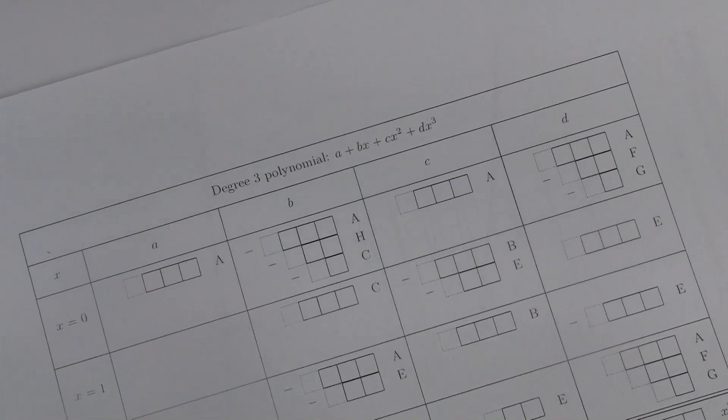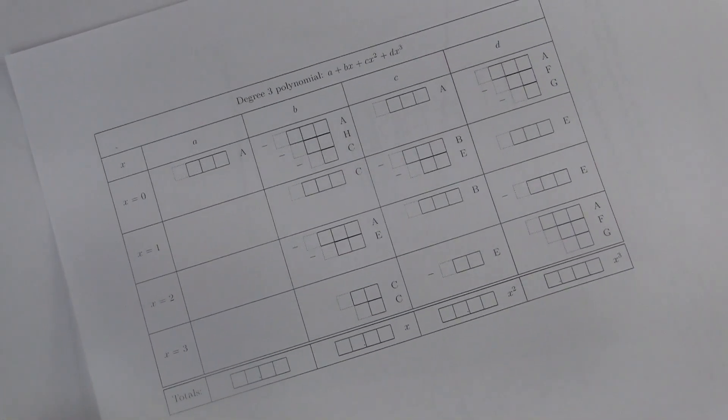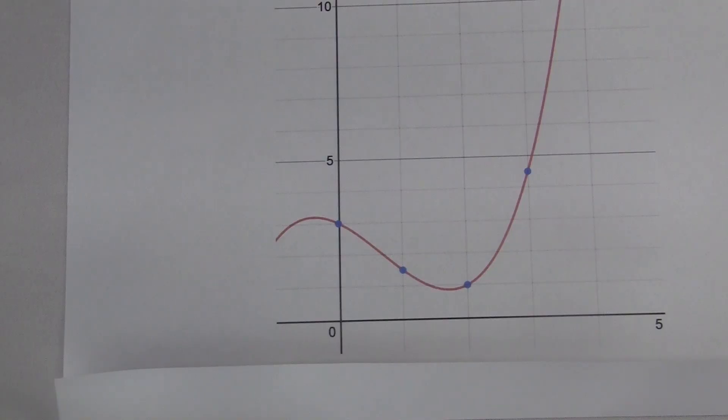So go find the worksheet for degree 3 polynomial. The worksheet tells me to focus on the values at x equals 0, 1, 2, and 3. So I marked those points off on my graph.